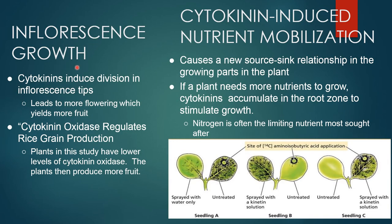Inflorescence growth: cytokinin induces division in the inflorescence tip, leading to more flowers which yield more fruit. Cytokinin oxidase regulates rice grain production. Plants in this study have lower levels of cytokinin oxidase and then produce more fruits.